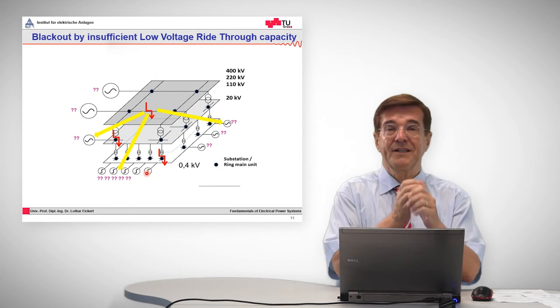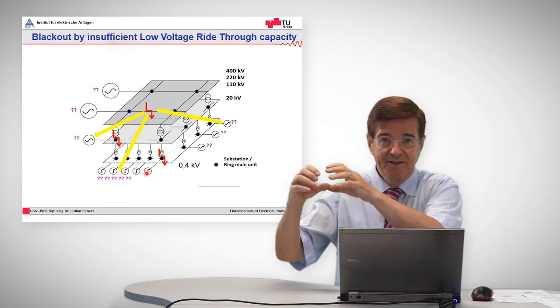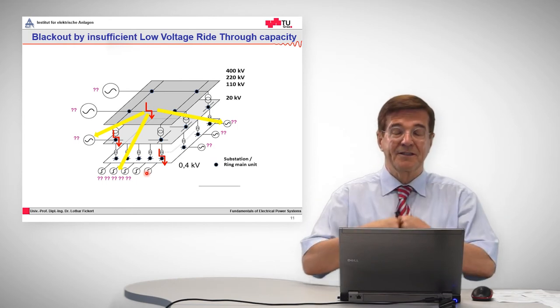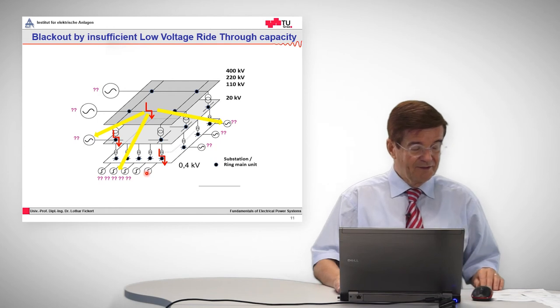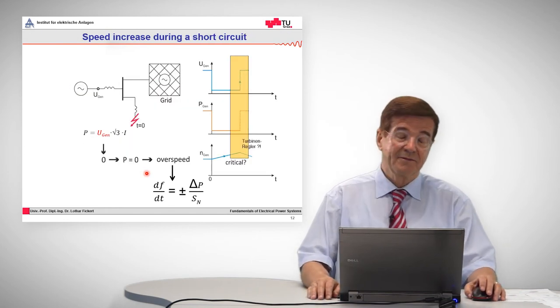And that means that all these generators that have these decentralized in-feed, they have no synchronizing voltage anymore. And that leads in many cases to the loss of stability. When there is no voltage, there is no power exchange between the generator and the system. So the system is not kept energized anymore and the generators trip out as well. So this is the low voltage ride through capability induced breakdown.